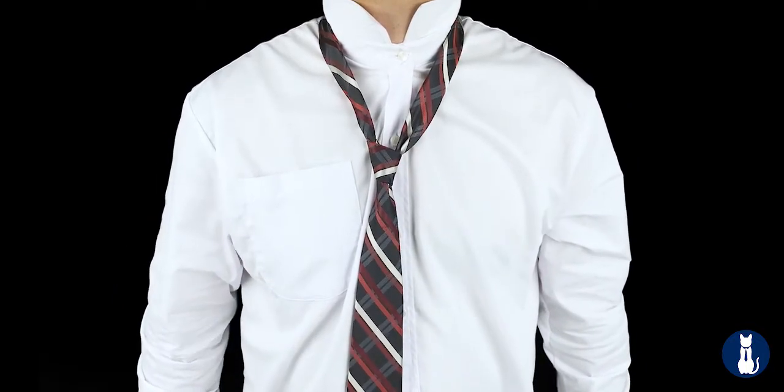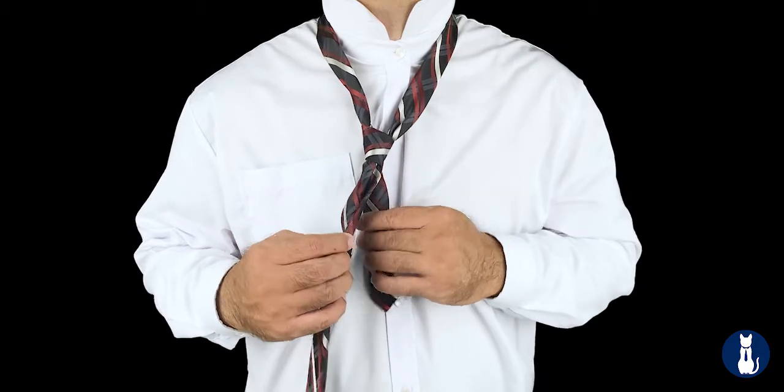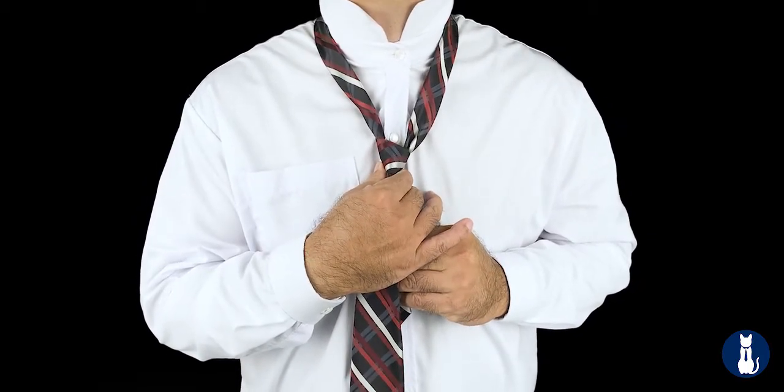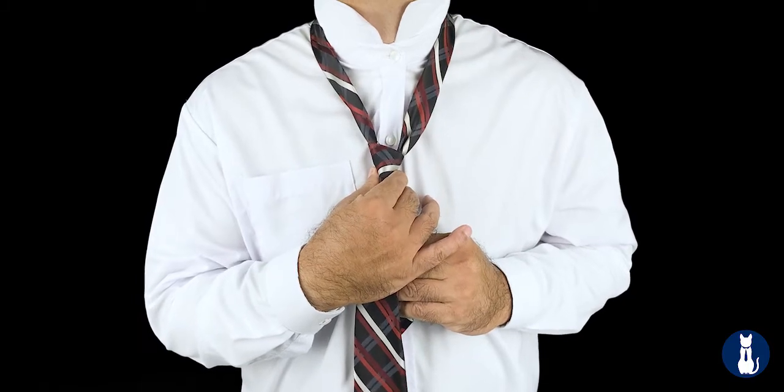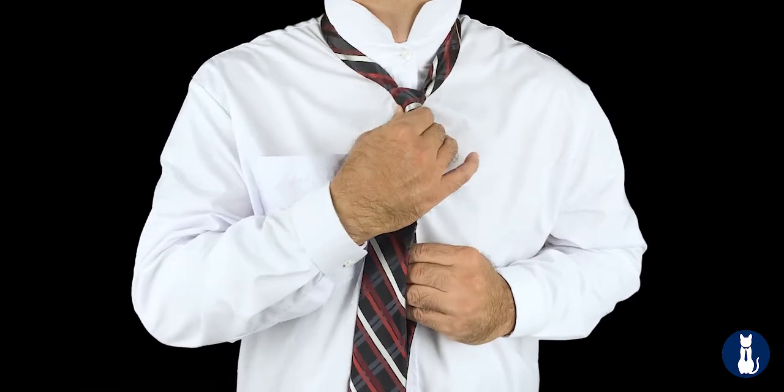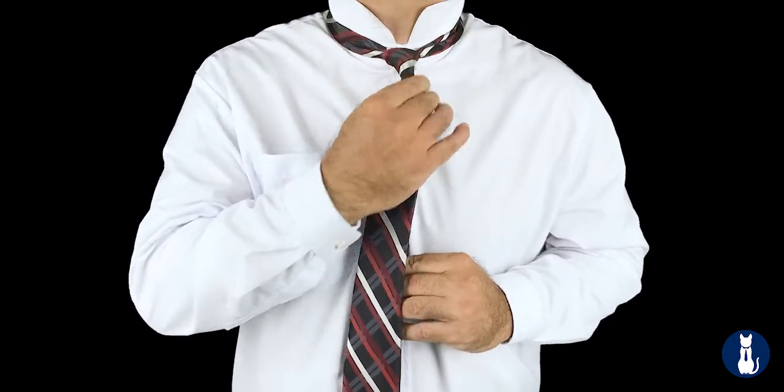To tighten the tie around your neck, grab the tail with one hand and the bottom of the knot with the other. And now you do a pull and slide motion. Pulling the tail, slide the knot up. Pull slide, until you close the tie hole.